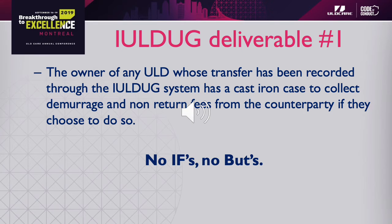So here we come with the IULD UG deliverable number one. The owner of any ULD whose transfer has been recorded through the system has a cast-iron case to collect the demurrage and non-return fees from the counterparty if they choose to do so. No ifs, no buts.